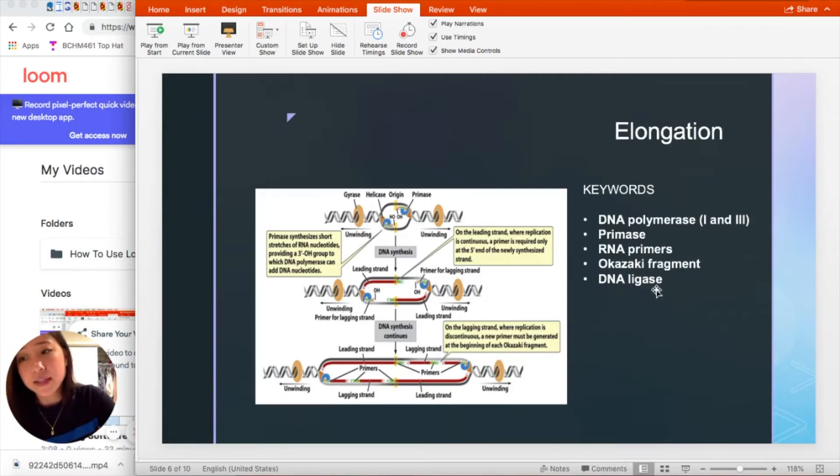And as mentioned in previous slides, DNA polymerases need a pre-existing three prime OH group on a nucleotide in order to add a new nucleotide. So this is why we have RNA primers.